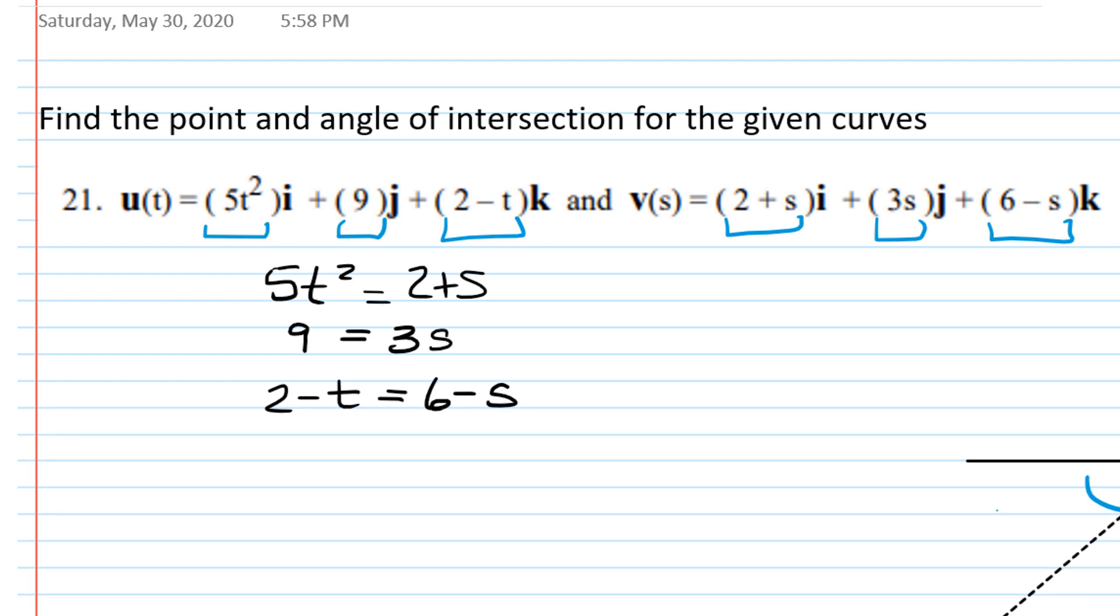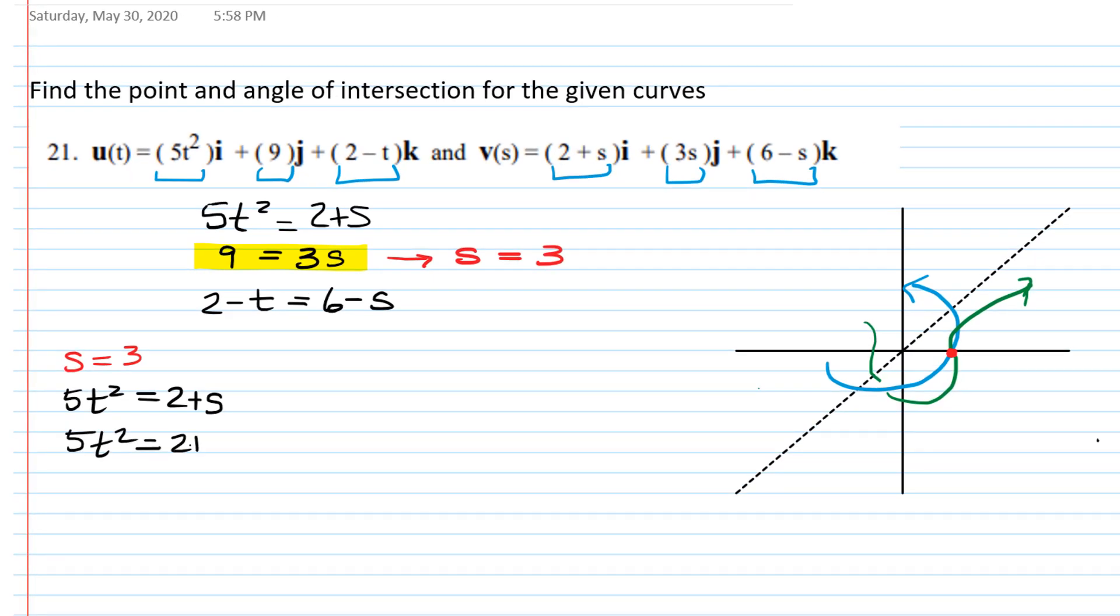Okay, so the first thing I notice after inspecting these equations is that there is one equation that only has one variable in it. So let's go ahead and solve that one and see that s is actually equal to 3. That's the only way that we can get an overlap in these two functions. And let's figure out what t might go with that. Let's plug s equals 3 into each one of these equations and see what happens. So if I plug s equals 3 into the equation 5t squared equals 2 plus s, we're going to have 5t squared equals 2 plus 3.